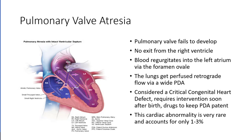If that patent ductus arteriosus isn't there, there is no circulation going into the pulmonary vasculature at all because the pulmonary valve is completely closed. And because of the foramen ovale being patent, you have deoxygenated blood shunting into the left side, so we get deoxygenated blood out into the periphery.